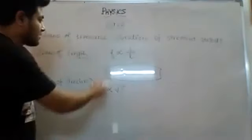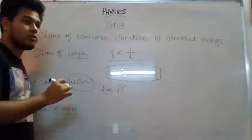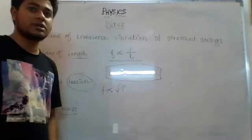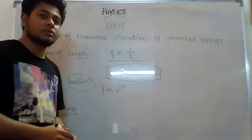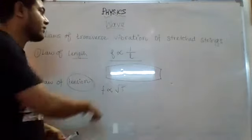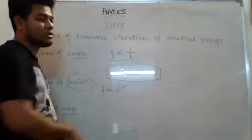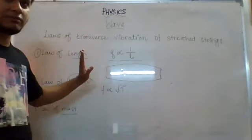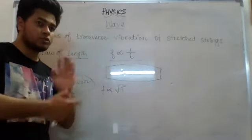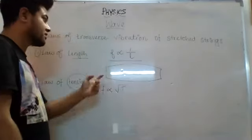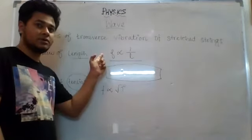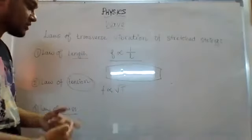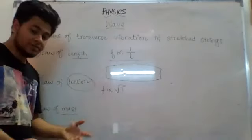From the Law of Length, very important MCQ questions come. If I double the length, what will be the change in frequency? It will become half - very good. If I triple the length, the frequency will become one third. In the reverse position, if the frequency has become half, that means the length has become double. So some reverse-type questions may be there - you must be ready.